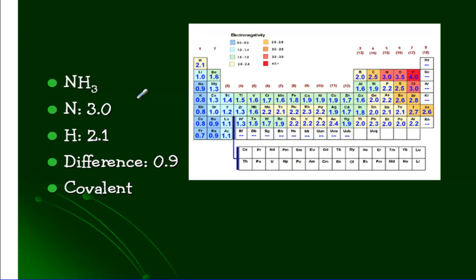If we look at ammonia, which is NH3, nitrogen is 3.0, hydrogen is 2.1. So we have a difference of 0.9. That's less than 1.7, so ammonia is going to be covalent.